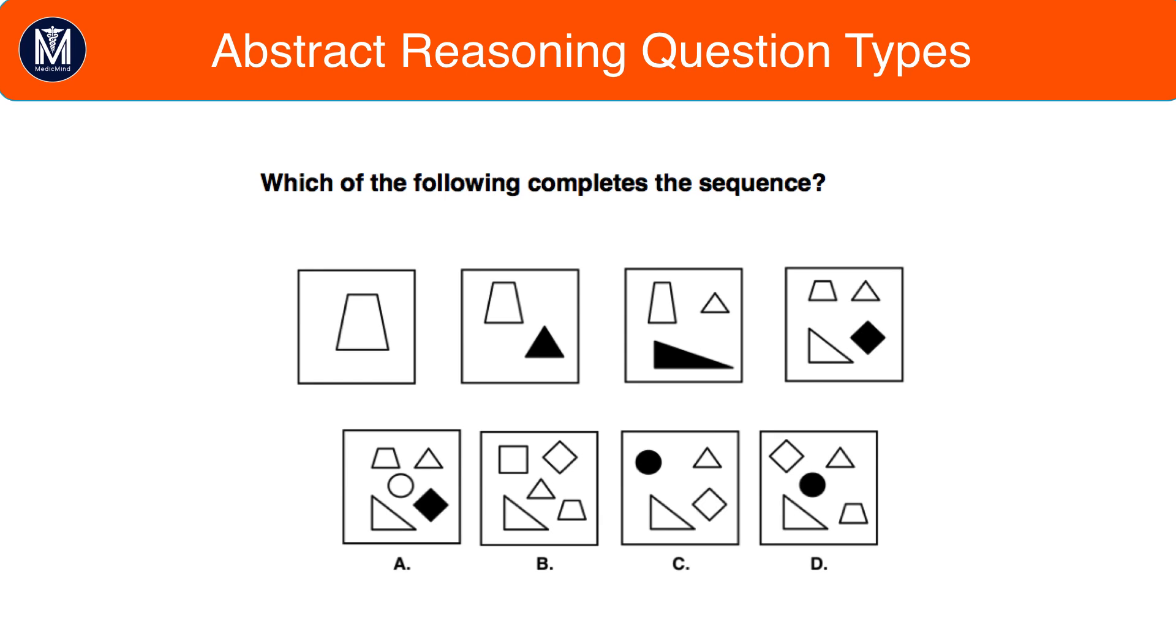However, this doesn't give us one answer yet, so we need to go back to the pattern and find a secondary pattern. Looking at it, we see that the new shape is always shaded. Therefore, the answer to this question is D. Because in A, the square, the old shape, is shaded, whereas the circle, the new shape, is not. And in B, there's no shaded object. Therefore, the answer is D.